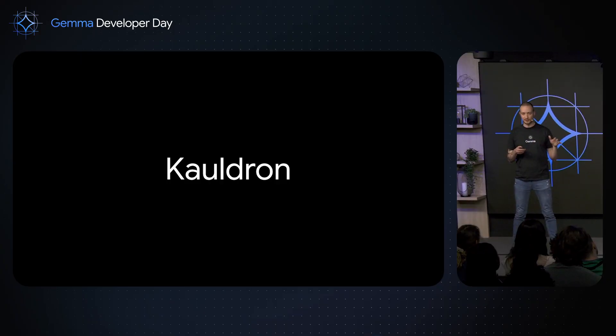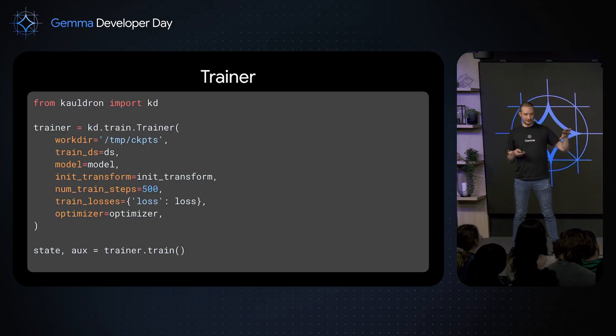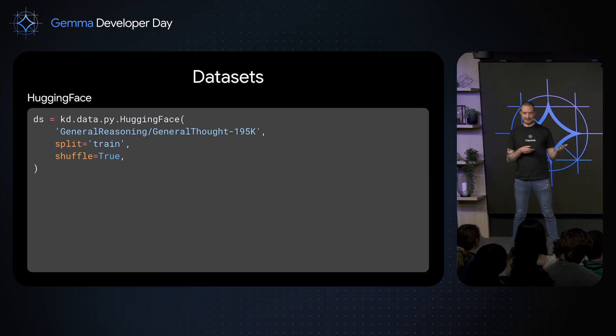Cauldron is an open-source library actively used at Google and designed to train any arbitrary model on any arbitrary modality. Looking at an example, this API will look very familiar — you import the library, create the trainer, and then call the train method, which will launch the training and return the final parameters.